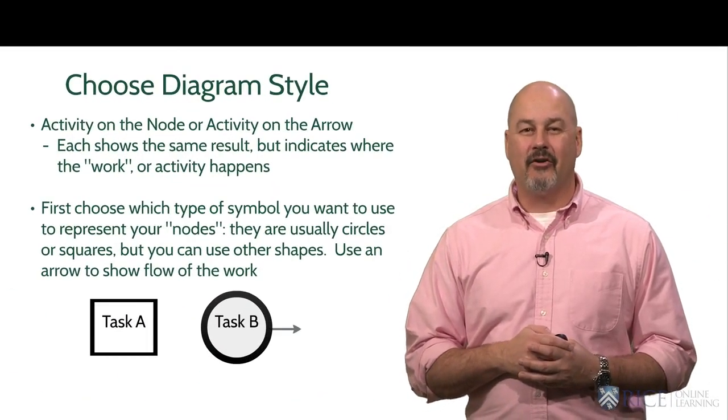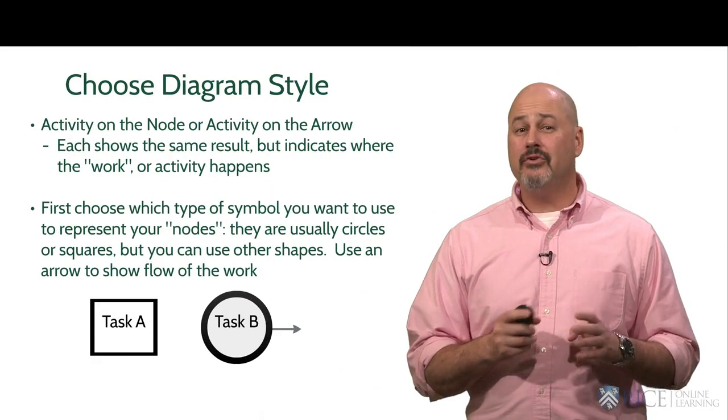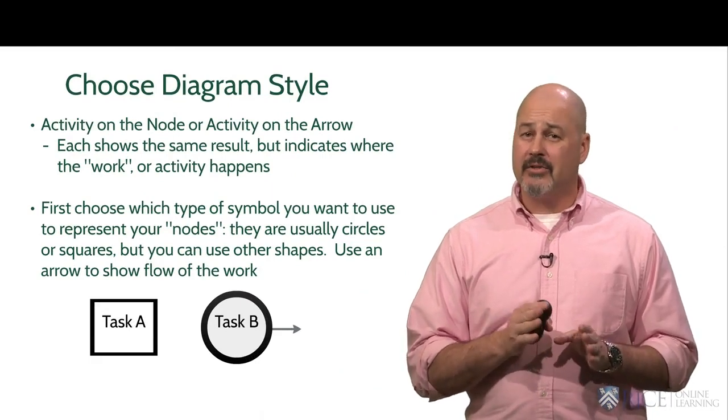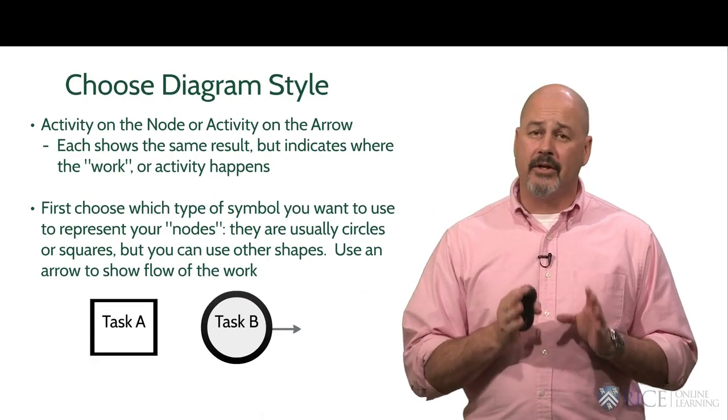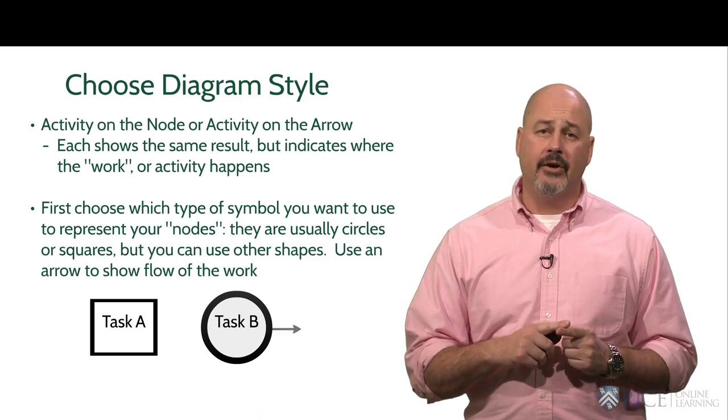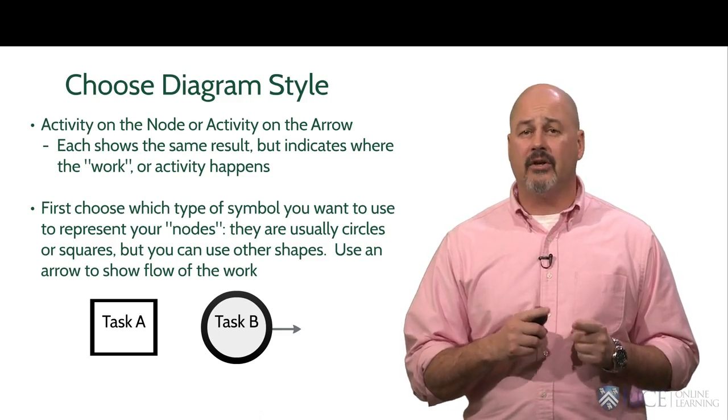The next step is to determine the type of diagram you'd like to use between two types, and we're only going to talk about two types. There are others, but for this example we're going to use two types: activity on the node or activity on the arc, which we'll explain in one minute.